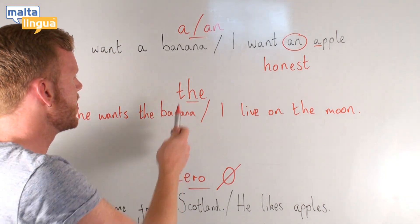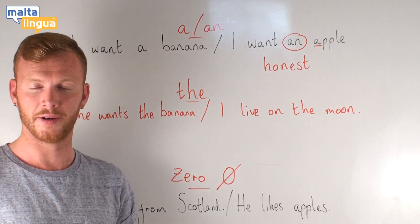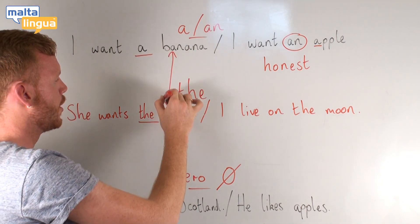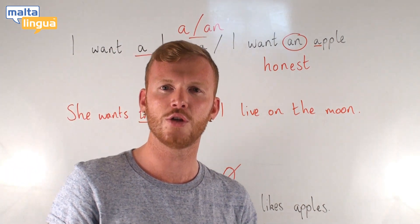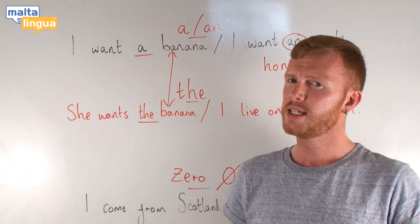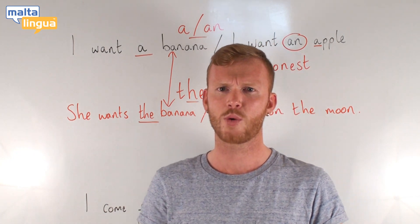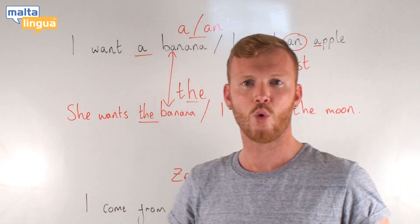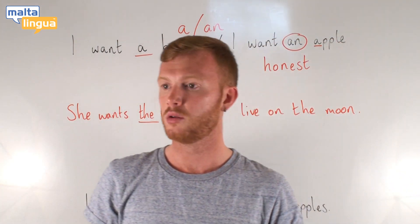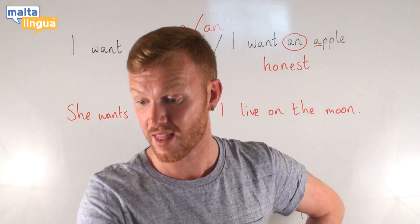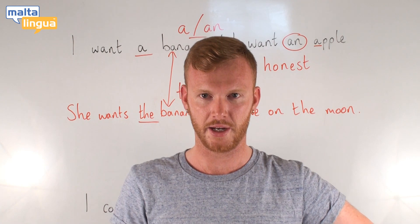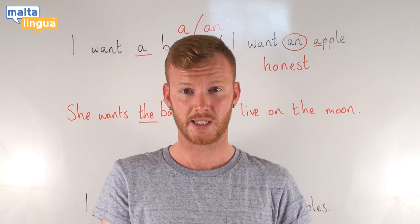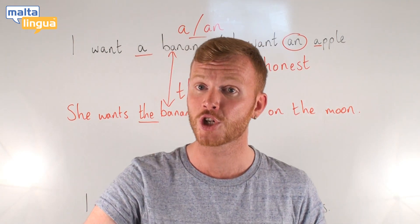Moving on. The. She wants the banana. So this time, although the word is the same, I have chosen to use 'the'. Why? Well, 'the' is a definite article — it is when we are referring to something specific. She wants a banana — what banana does she want? This one. She wants the banana. We use 'the' to describe something more specific or something which has been mentioned before.